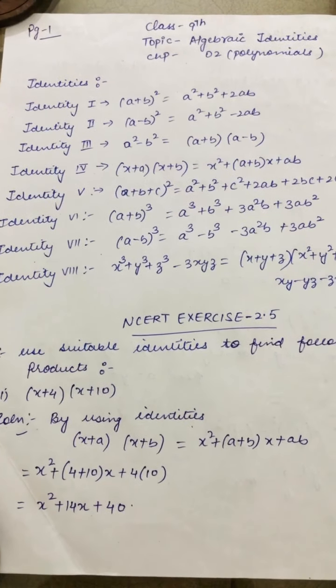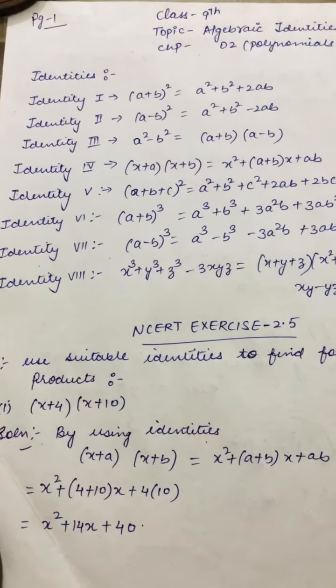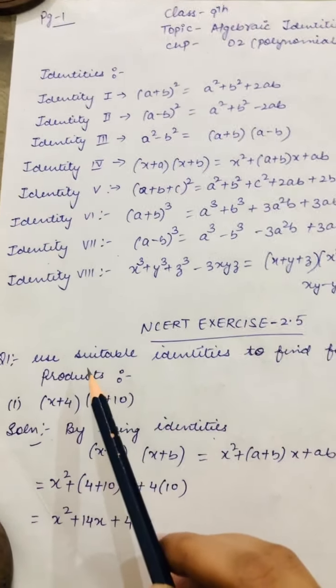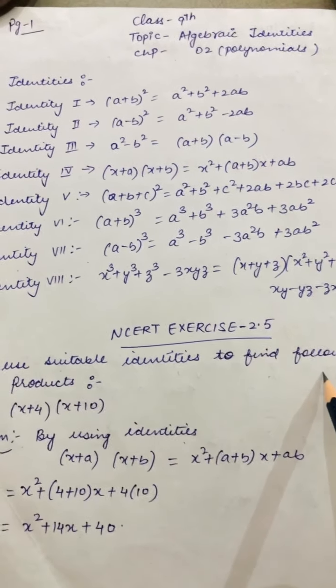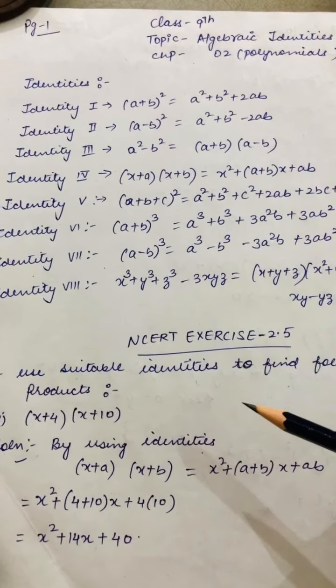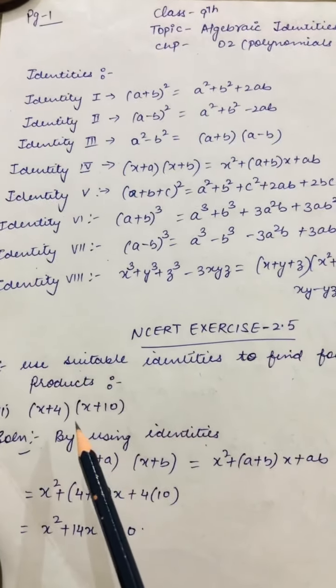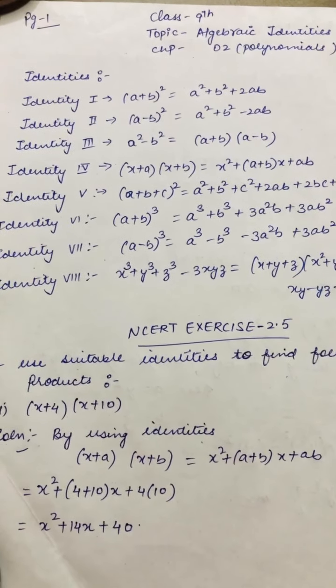The very first question, question number 1: use suitable identities to find the following products. You have to check the identities first, then find the product. Like, the very first question is (x+4)(x+10).